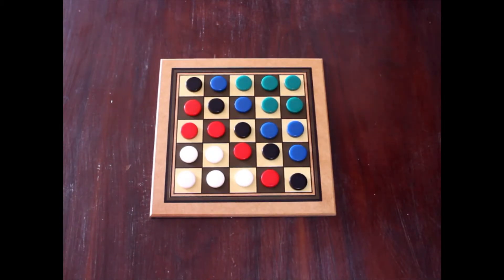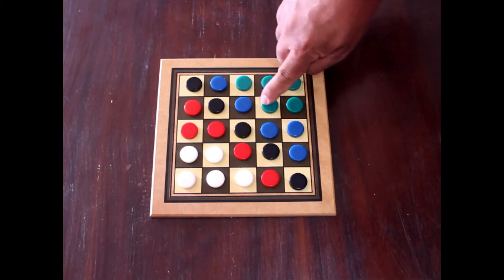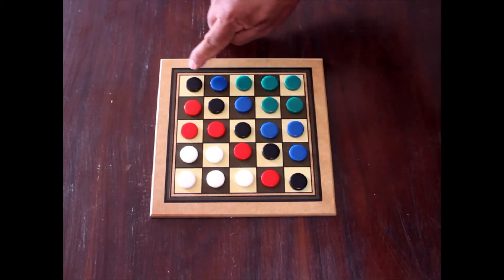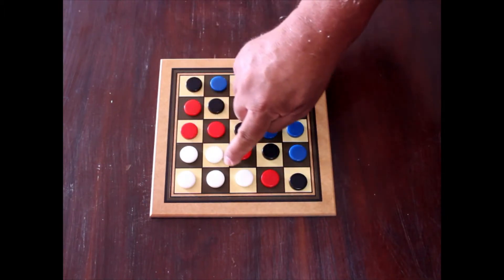Chips arranged in sequence of colors on the diagonals of the board like a zigzag. Green, blue, black, red, white.